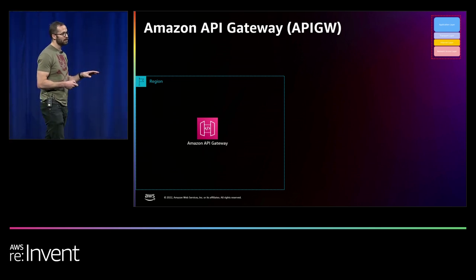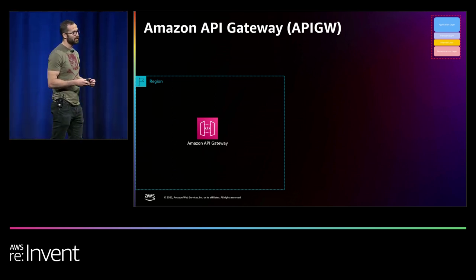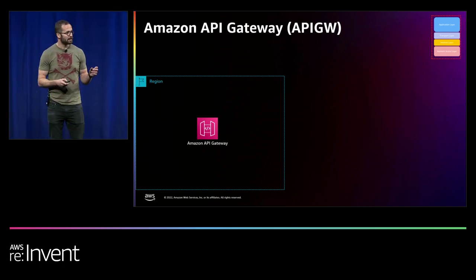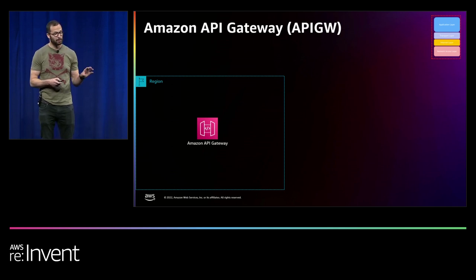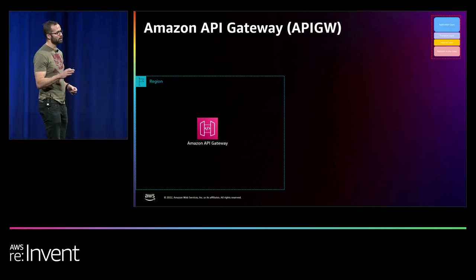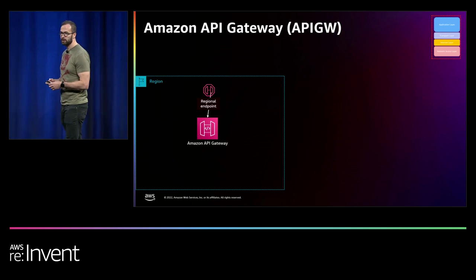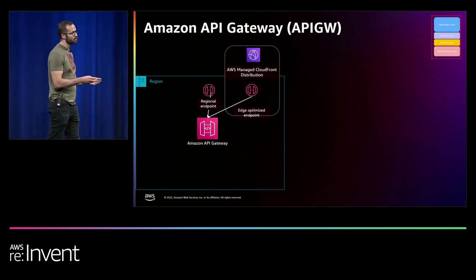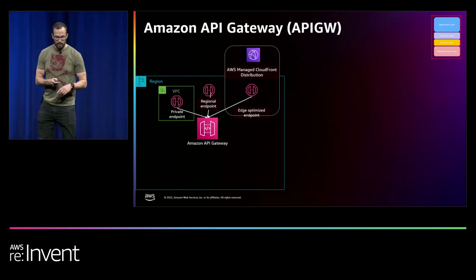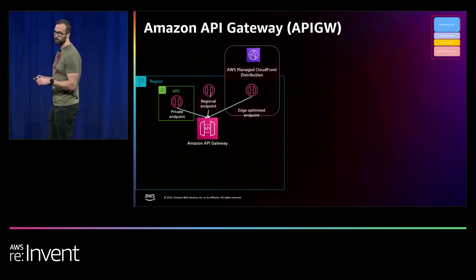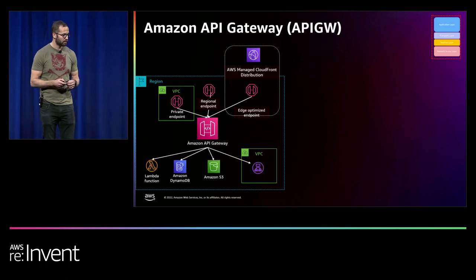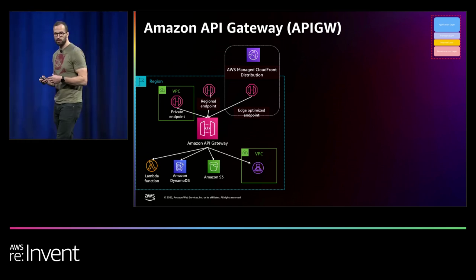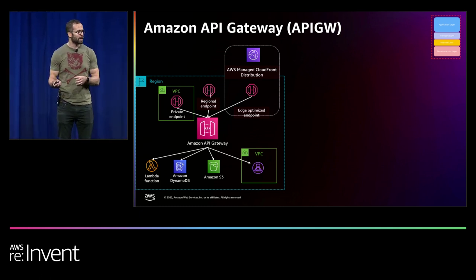Staying in the application layer but moving away from load balancing toward organizing your APIs — if you're looking at aggregating and simplifying how you manage your APIs, you can use Amazon API Gateway. API Gateway doesn't live inside a VPC; it's a service deployed into the region where you define your APIs and decide how they should be consumed and what they should map to on the back end. For consumption, they can be public using a regional endpoint, edge-optimized using our CDN service, or presented privately into a VPC using a private endpoint. On the back end, you can integrate with Lambda, DynamoDB, S3, or even a load balancer in another VPC.